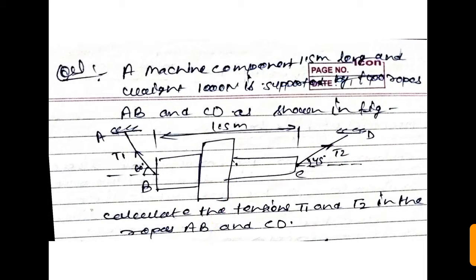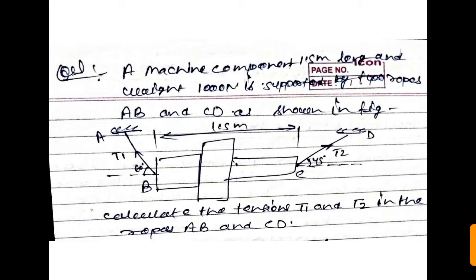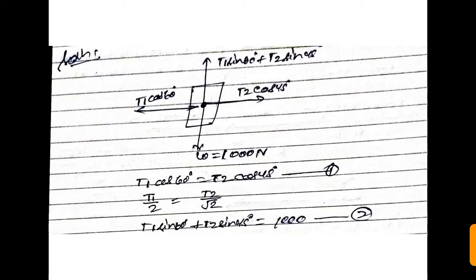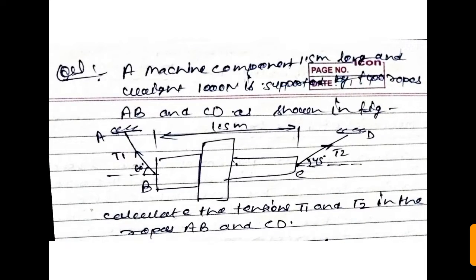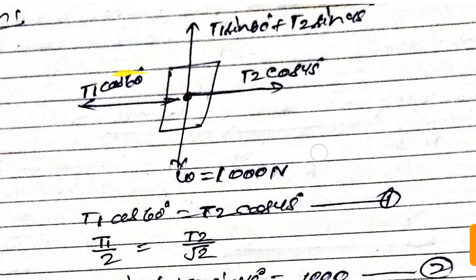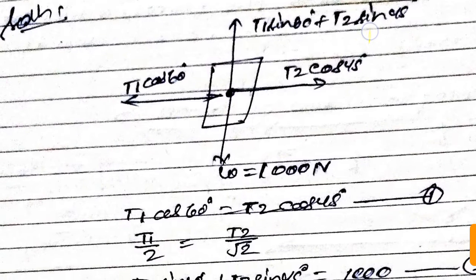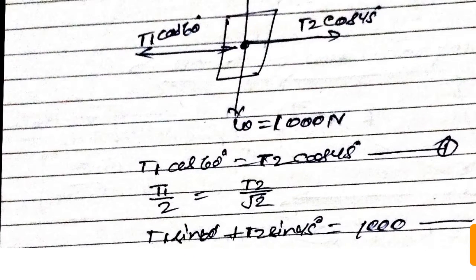To calculate the tensions in the two ropes, we take the components T1 and T2 at the same point. The mass has a weight of 1000 Newtons. Resolving vertically: T1·sinθ₁ + T2·sinθ₂ balances the weight. Here θ for T1 is 60° and for T2 is 45°, so T1·sin60° + T2·sin45° = 1000 N.